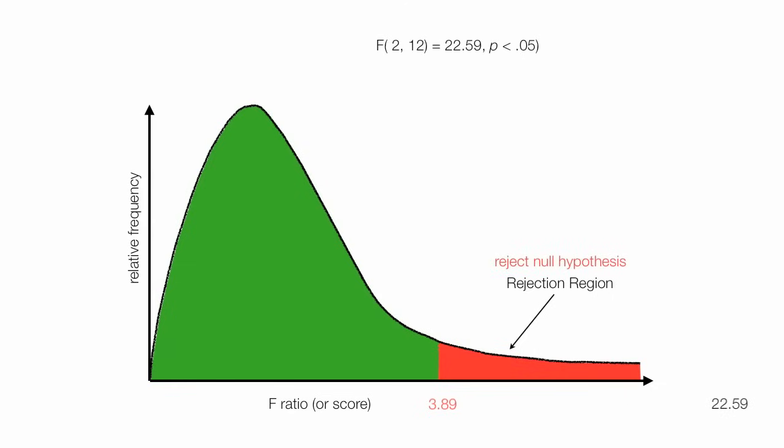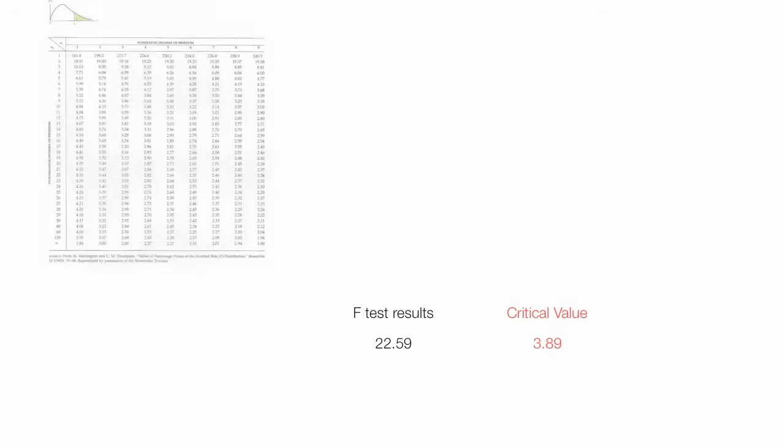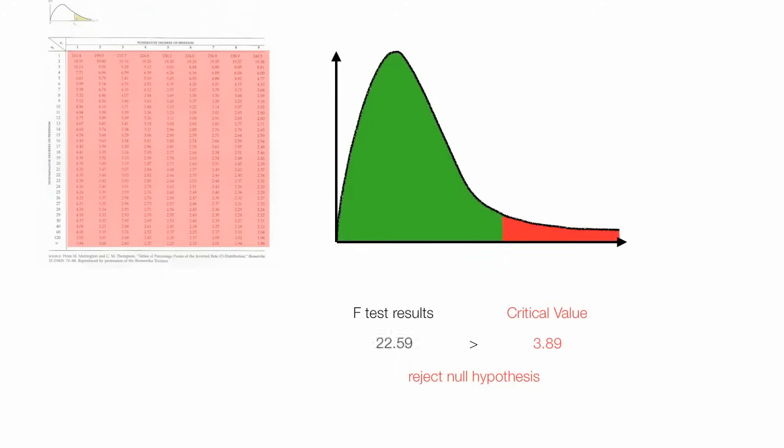Actually, 22.59 is probably way out there. So it turns out I use these tables, and the body of the table is a critical value. And I'm comparing my F test results with some critical value that I look up in a table to see if I reject the null hypothesis. In this case I do, because the F test results are greater than the critical value.